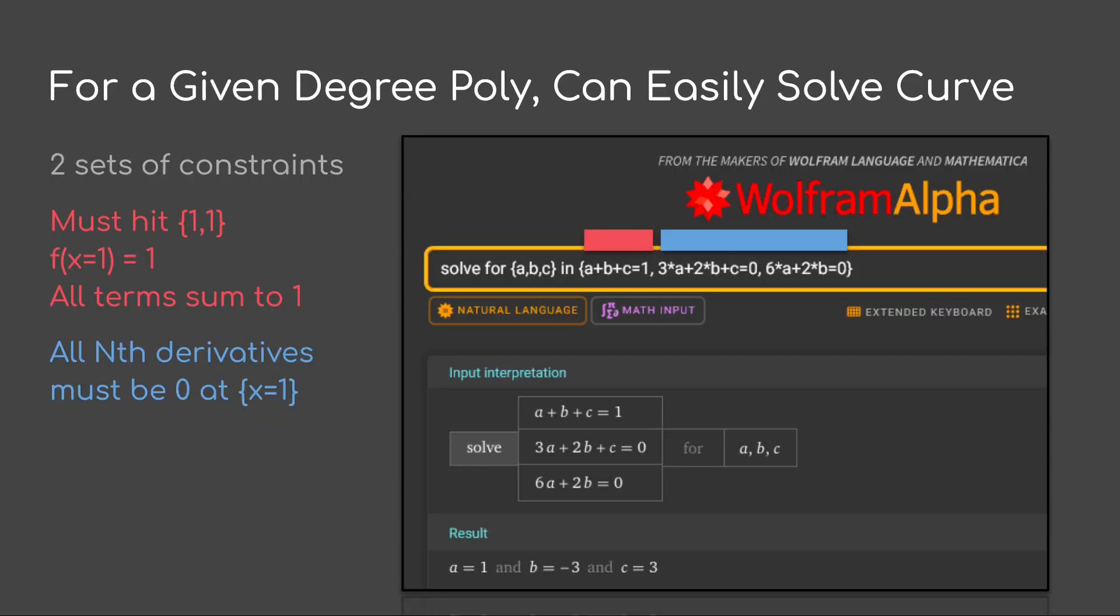So for a given degree of polynomial, we can easily solve the curve. We just go into Wolfram Alpha, write some equations in here. We have two sets of constraints. We must hit 1, 1 in that end of the Tone Mapper.